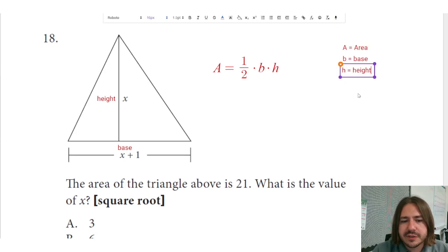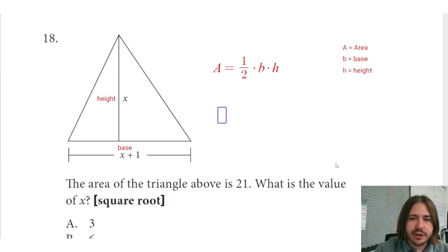Okay, so it says the area of this triangle is 21, what's the value of x? The area is 21 equals 1/2 times the base, which is x plus 1, times the height, which is x.